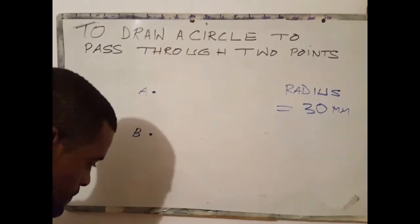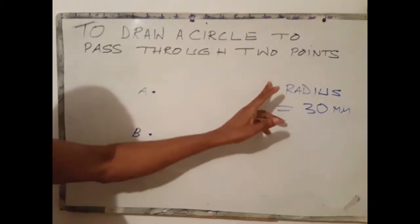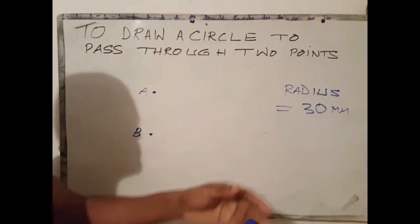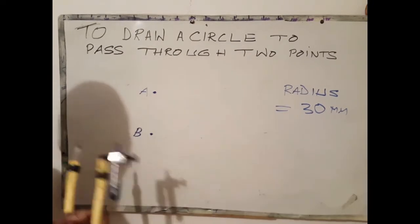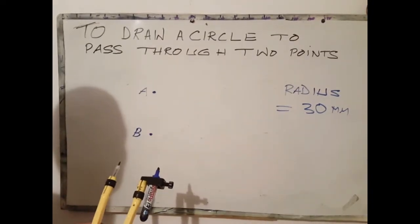Let's draw this. In this case we wish to use a radius of 30 millimeters. Next step is open your compass to 30 millimeters.